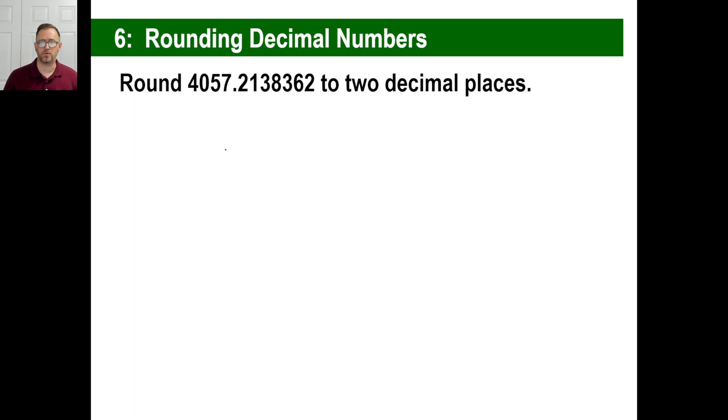Let's try another one. Round that to two decimal places. It's a piece of cake. There's the two decimal places right there. Look over to the right. That's not a five or greater, so it just stays like that. There you go.